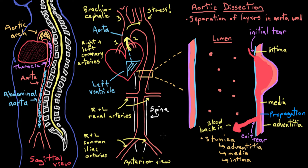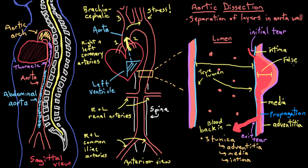So in an aortic dissection, you've created a true lumen — which is lined by intima on both sides — and a false lumen, which is between the intima and the media. Some people develop other pathologies within the false lumen later on. So now you know what a dissection is, but what causes it?